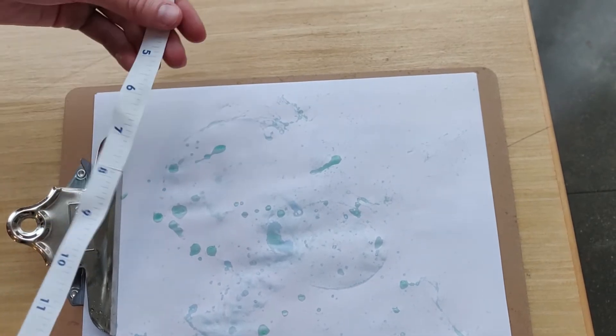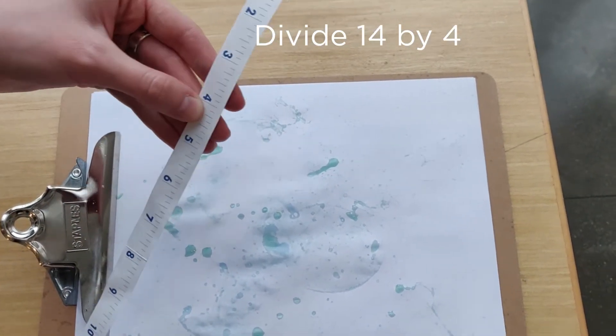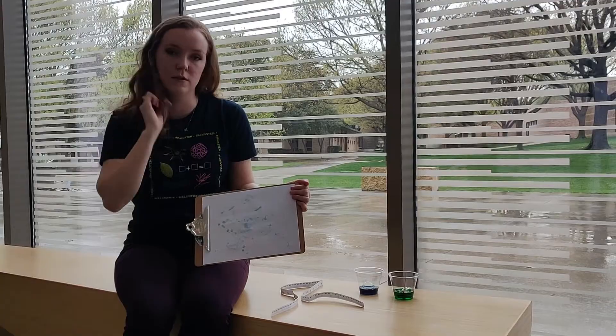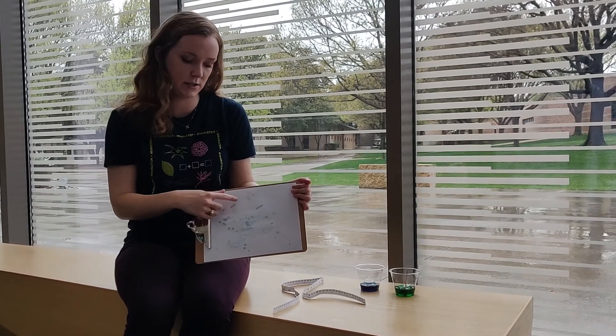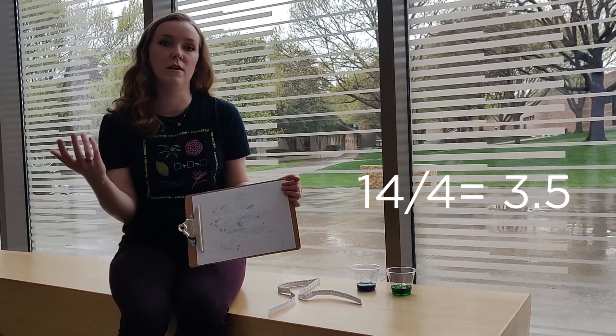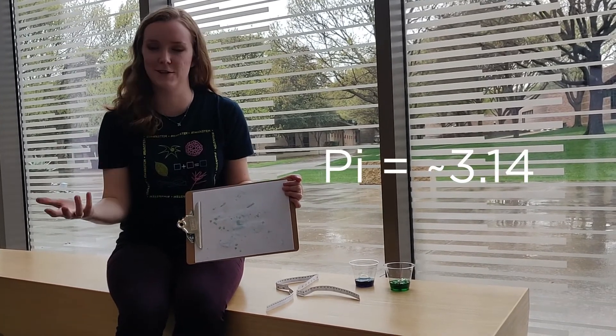So if we divide 14 by 4, we can see how close we get to pi. The distance around was 14 inches, and the distance across, the diameter, was 4 inches. When we divide 14 by 4, we get 3.5. We know that pi is 3.14, and then a bunch of other digits. So we're getting pretty close.